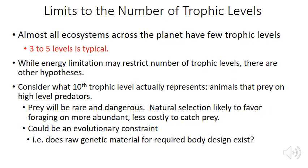Most ecosystems have relatively few trophic levels — 3 to 5 is typical. Beyond energy limitation, there are other reasons for this. Higher trophic levels would represent animals preying upon high-level predators, such as a species that persisted entirely on great white sharks. Such prey is very rare and very dangerous, so natural selection would likely favor foraging for more abundant and less costly prey. There may also be fundamental evolutionary constraints — it's questionable whether the genetic raw material exists for such a predator to actually evolve.